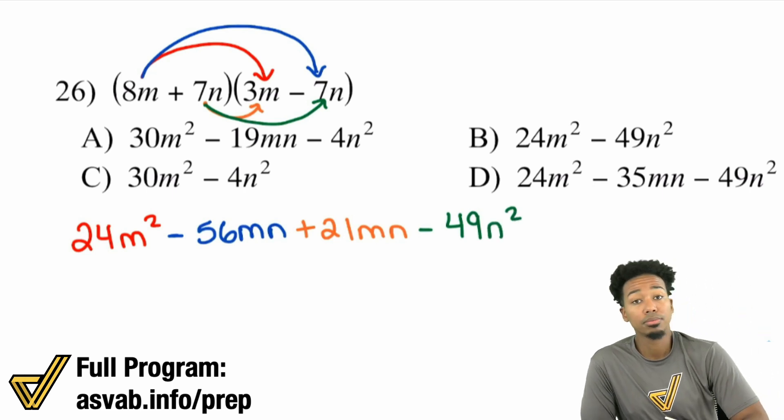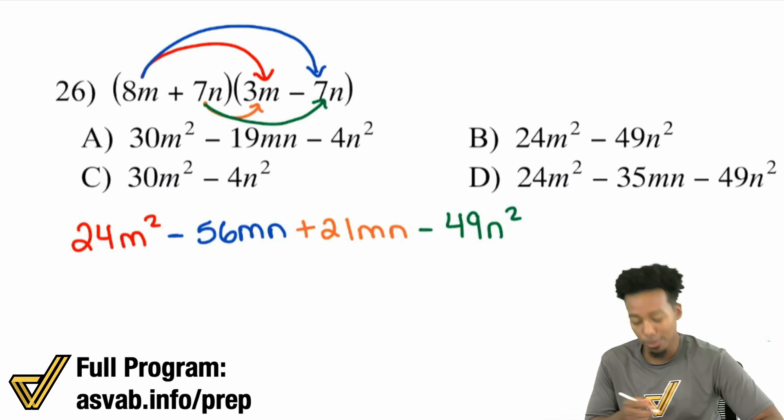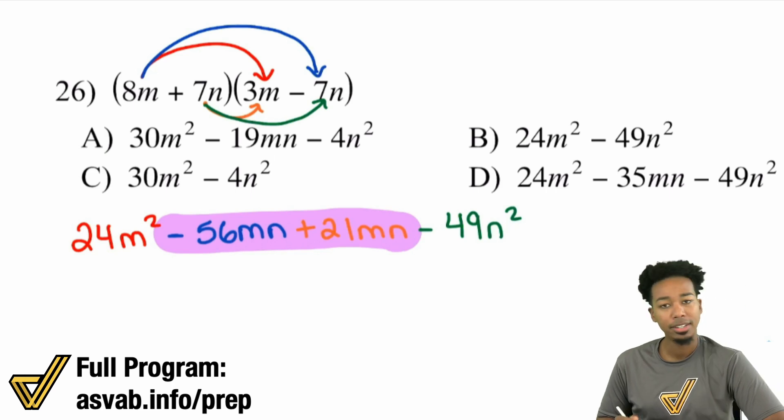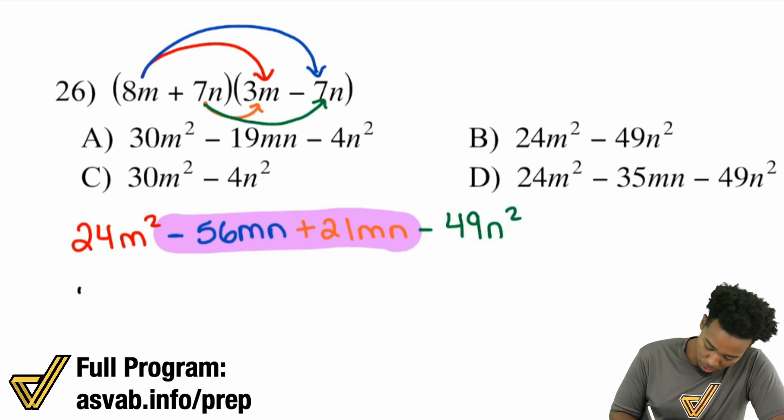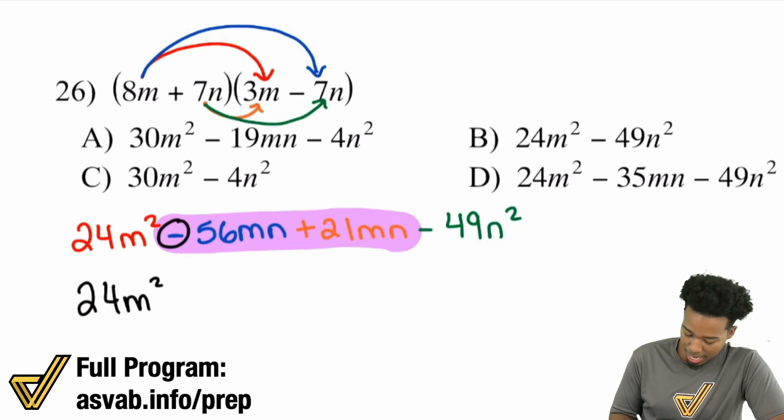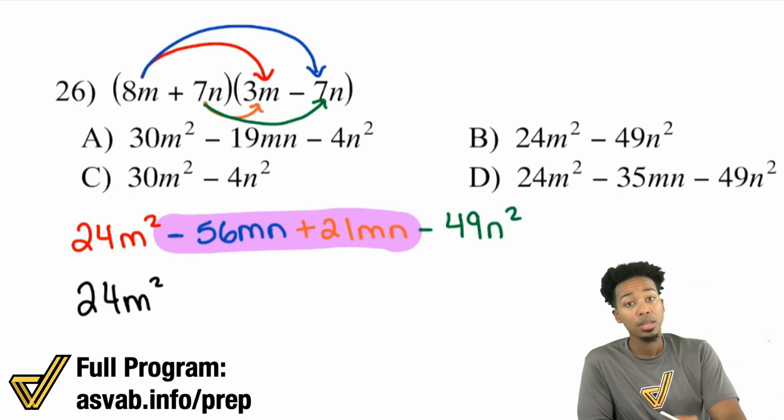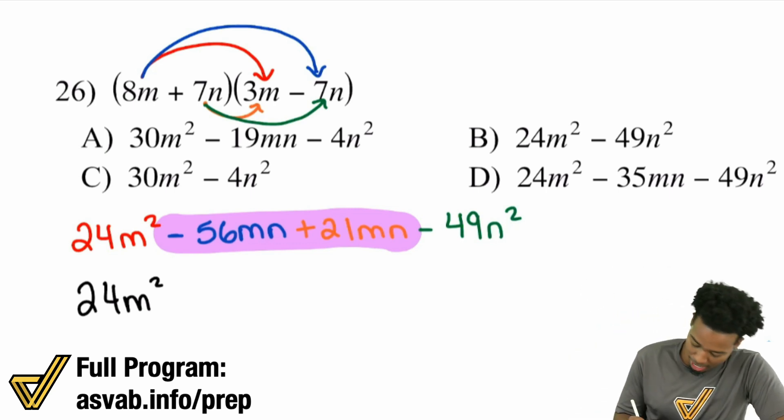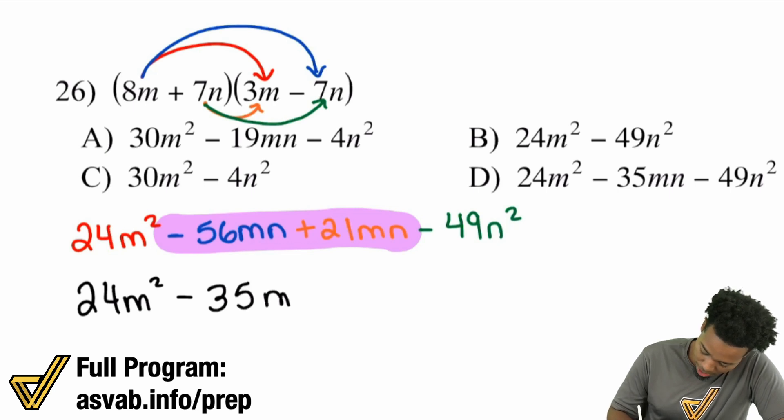Lastly, right up here by math party people. 7N times negative 7N. Well, positive times a negative is a negative. 7 times 7 is 49. And then N times N is N squared. Do we have any like terms we can combine? We absolutely do. We have ourselves right over here MN, MN. Same variables and exponents, so we can combine these. So I'll rewrite the 24M squared. Then we have to figure out what a negative 56 plus 21 is going to be. Well, you can just do 56 minus 21, then keep it negative. 56 minus 21 is going to be 35. Keep that 35 negative. So negative 35 MN.